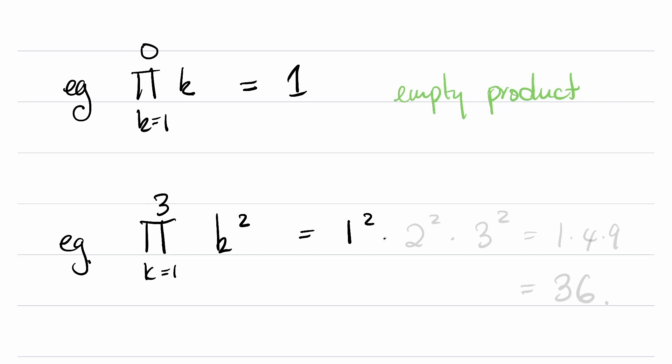So this is going to be 1 squared times 2 squared times 3 squared. And then we stop there. So 1 by 4 by 9, which is 36.